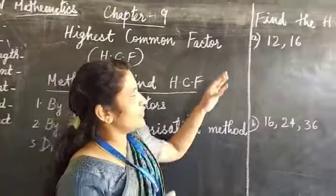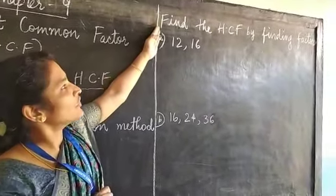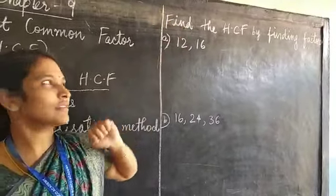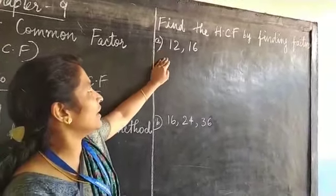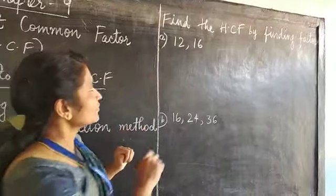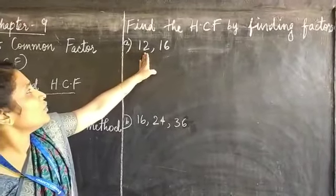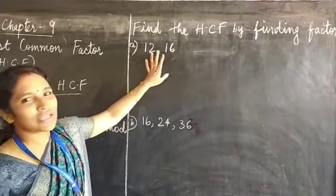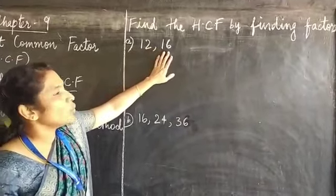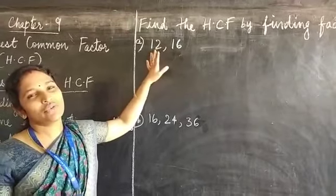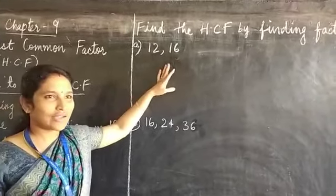Let's see the first question. We are going to find the HCF by finding factors. Let's see question number A: 12 and 16. Two numbers are given here - 12 and 16. We have to find the HCF of 12 and 16 by finding factors.